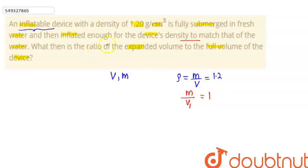Let us find the ratio of expanded volume to total full volume. Here V will have the value of 1.2 and V₁ will have the value of m.